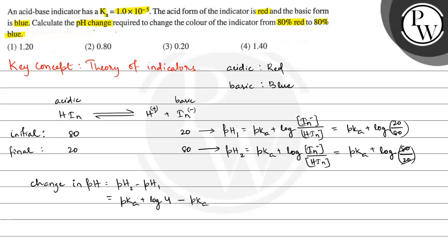Here minus sign, minus log 1 by 4. So pK and pK get cancelled and we have log 4 minus log 1 by 4. Minus log 1 by 4 we can write plus log 4, and this is equal to 2 log 4.